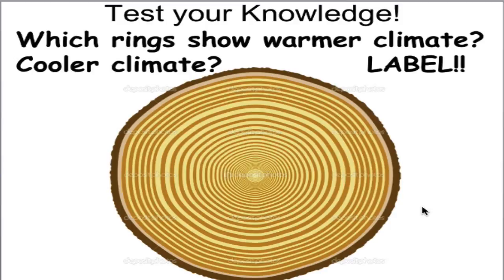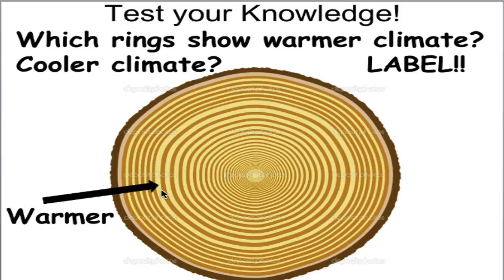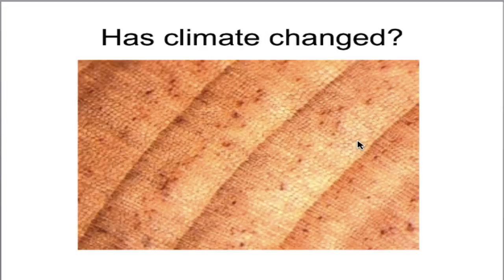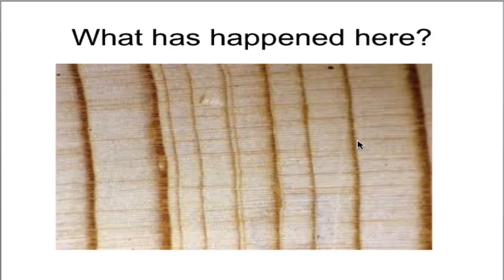In your notes, you have the exact same diagram that you're seeing right now. Please pause the video and draw arrows to the places where you think the tree rings indicate a warmer climate and colder climates. Make sure you label the arrows. This arrow here indicates a warmer time frame because the lighter rings are thicker. Over here would be a cooler-than-normal condition because those tree rings are thinner. There are definitely other places here that have warmer and cooler — those are just the ones I picked out. Based on the data on screen, would you say climate has changed? Why would you say so?